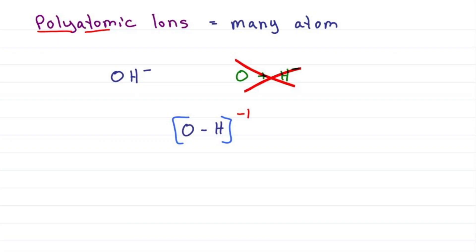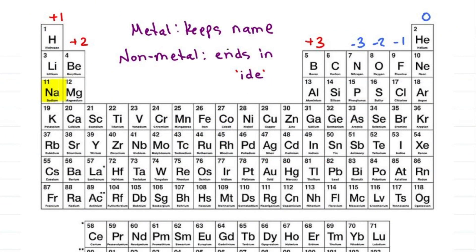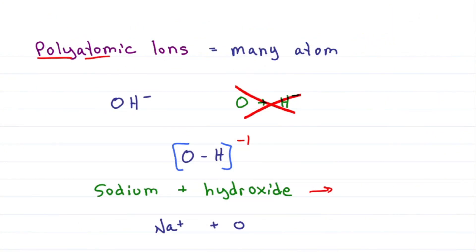What is the ionic compound made from sodium and hydroxide? We see that sodium is plus 1. We memorized hydroxide as OH minus. Na plus and OH minus have a plus 1 and minus 1 that cancel, giving me NaOH.